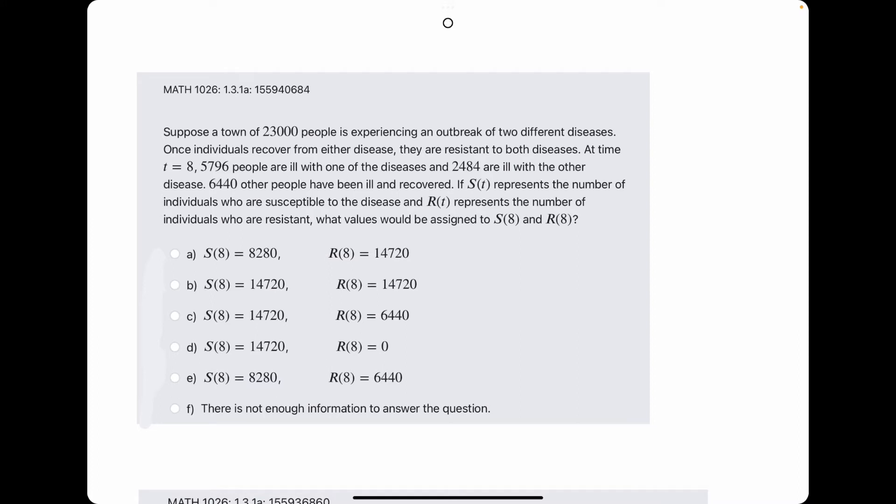Let's see. Alright, starting with 23,000, it says once they recover, they are resistant to both diseases, which means we will find R by finding the number of people who have recovered from both diseases total.